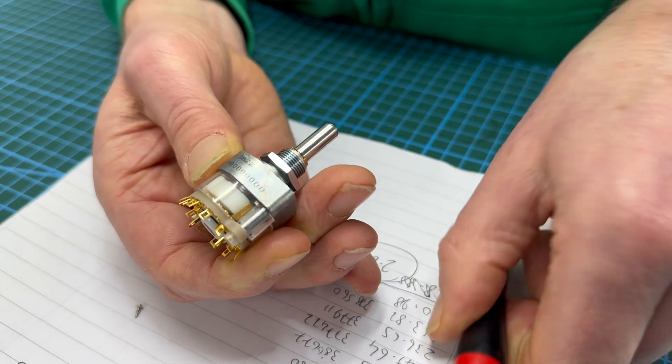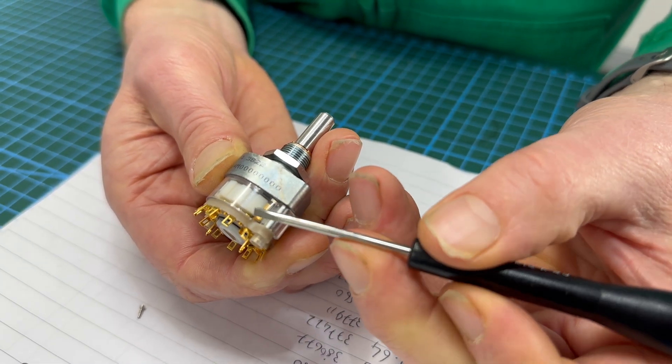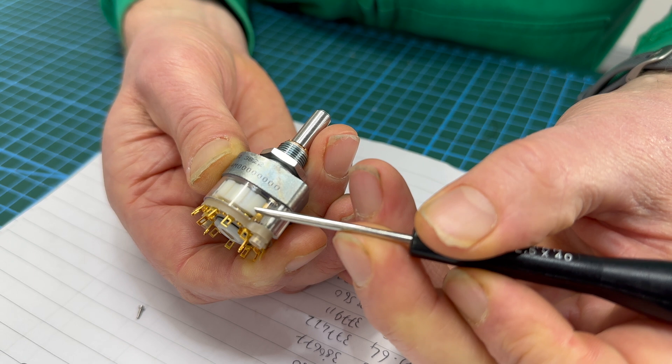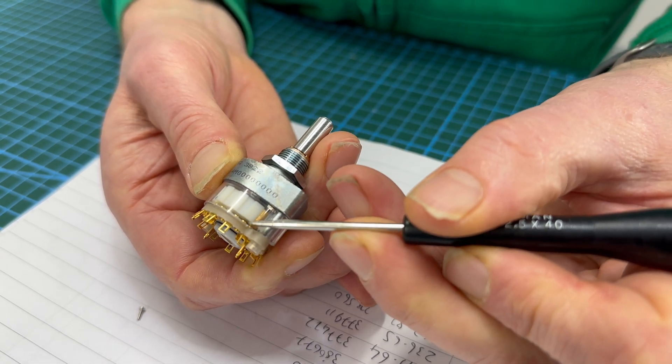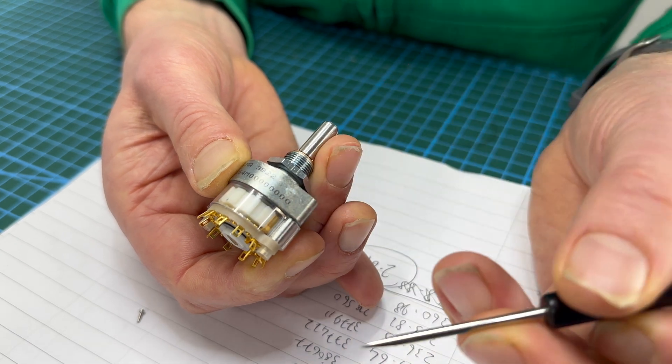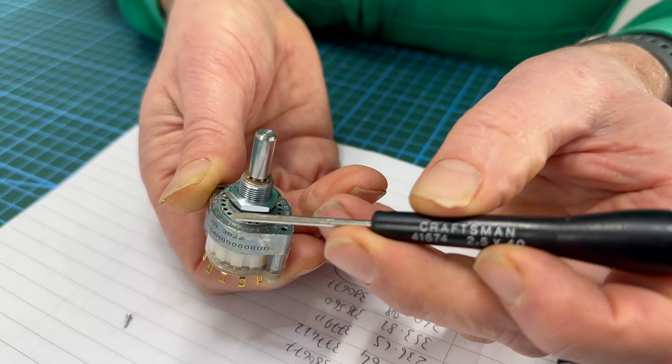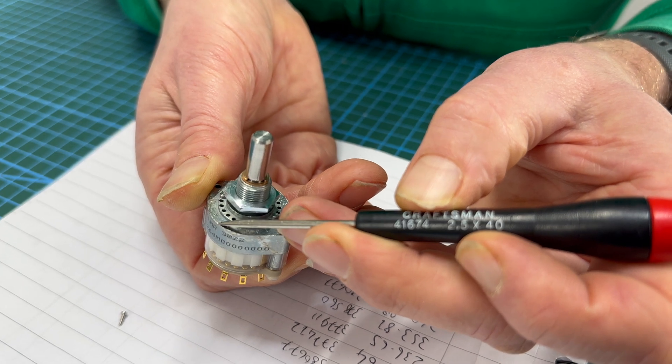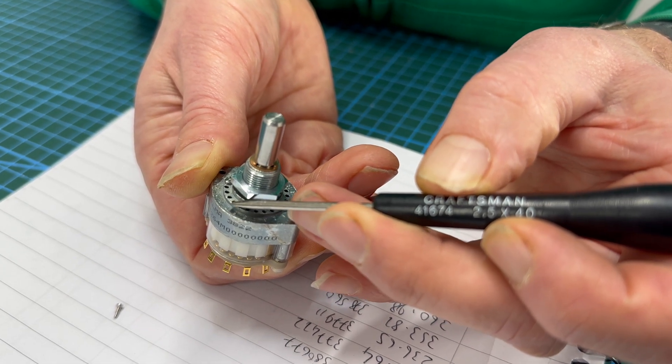So take it back to there and you count how many of the gold discs are. So you want it to stop there, it's one, two, three, four, five, six, seven. So you turn round and you can see the seven there that lines up with a hole.